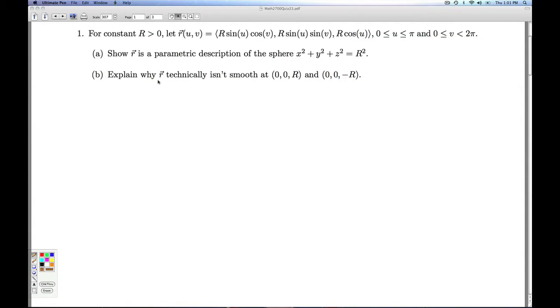All right, now we're asked to show why r technically isn't smooth at these two points. So to check for smoothness, I take this normal vector. I need to know this is continuous and non-zero. So how do I find ru of uv? That's the partial derivative of r with respect to u. The calculus of vector-valued function goes component-wise.